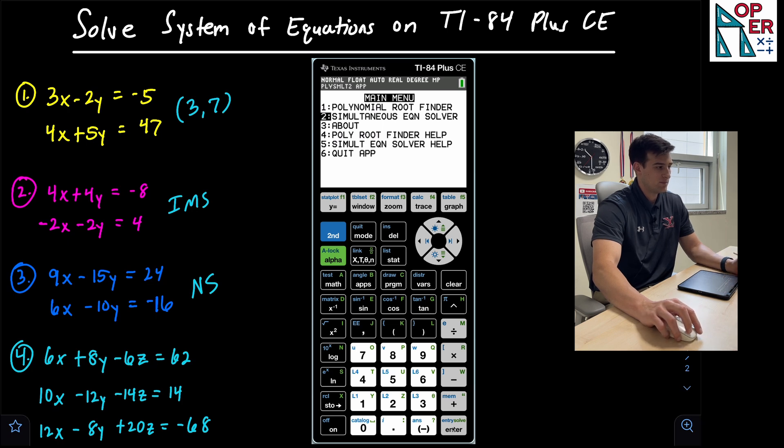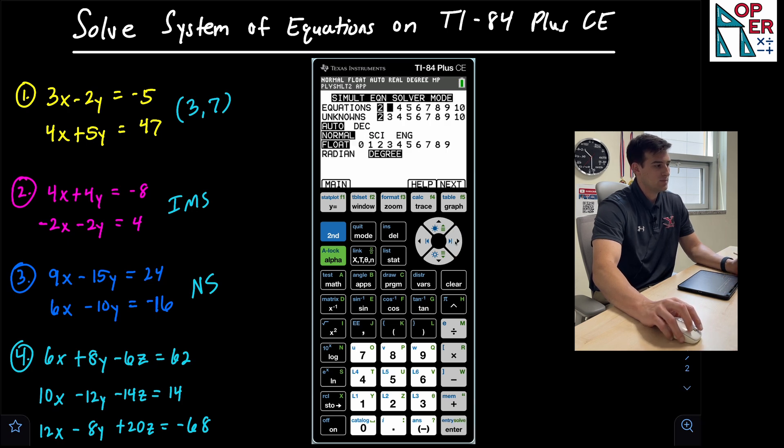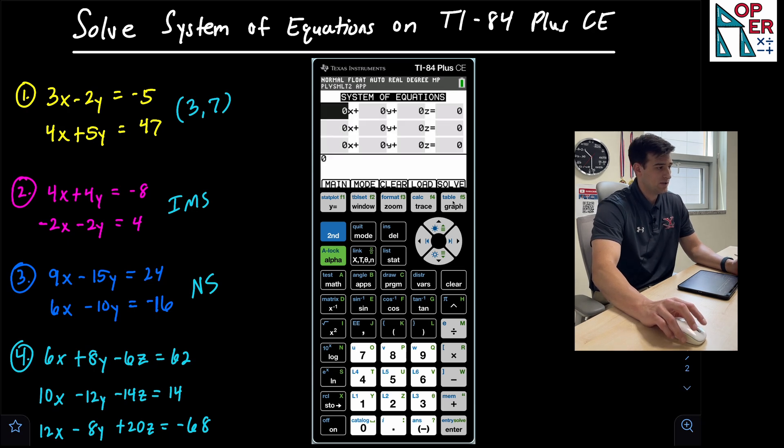Once again, I'm going to click on option number two, but now I can change my equations to three and my unknowns to three. Once again, I'm going to leave everything else as is. And I hit the graph button to go to the next screen.